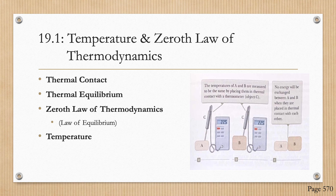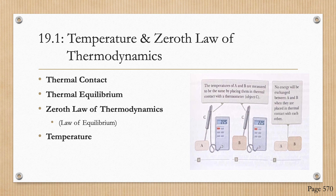Looking at this graphic, we consider two objects A and B which are not in thermal contact, and a third object C which is a thermometer. Our goal is to determine whether A and B are in thermal equilibrium with each other. The thermometer is first placed in thermal contact with object A until thermal equilibrium is reached, and the reading remains constant at 22.5. The thermometer is then moved and placed in thermal contact with object B, and the reading is recorded after equilibrium is reached. If these two readings are the same, we conclude that A and B are in thermal equilibrium — there is no exchange of energy between them.